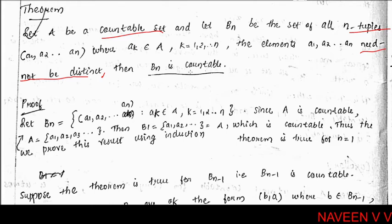Let A be a countable set and let Bₙ be the set of all n-tuples (a₁, a₂, ..., aₙ). The general term: Bₙ is equal to the set of all n-tuples (a₁, a₂, ..., aₙ) where aₖ belongs to A, k equal to 1, 2, 3 up to n.